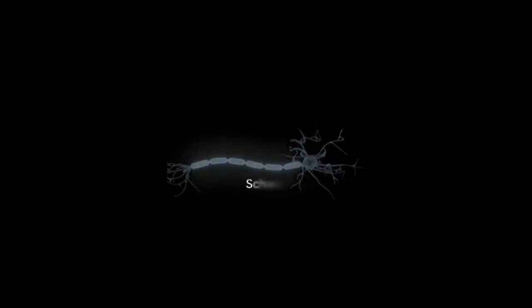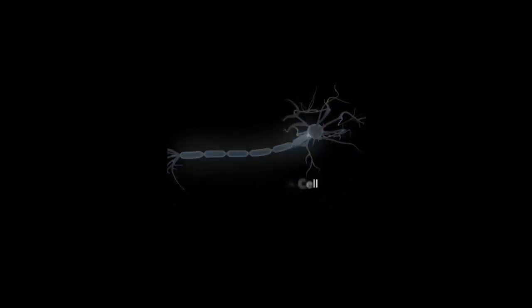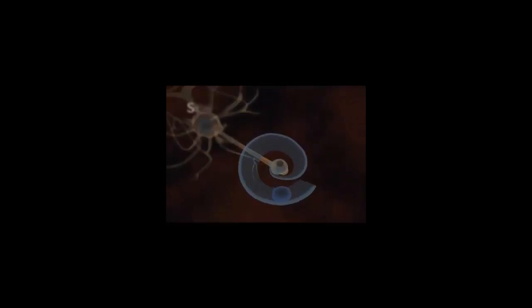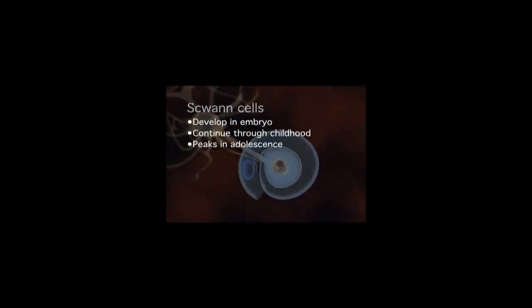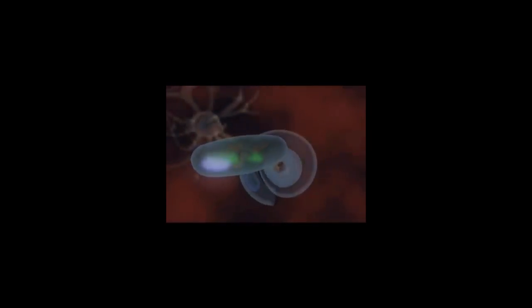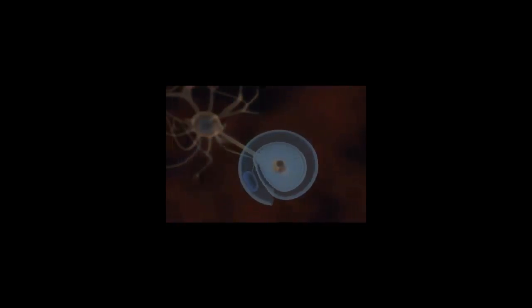What you will see and hear in this presentation is the development of myelin in the peripheral nervous system and the propagation of the action potential along a myelinated axon. The Schwann cell forms a protective covering around the axon. Schwann cells start to develop in the embryo and continue to increase the wrapping around the axon through childhood, increasing the thickness of the wrappings, which peaks in adolescence — this is why teenagers have such quick responses. Notice as the Schwann cell surrounds the axon that the nucleus and other organelles are squeezed to the outside wrapping of the cell.